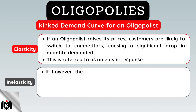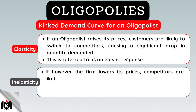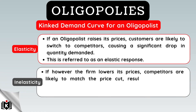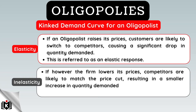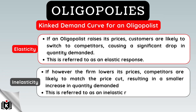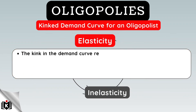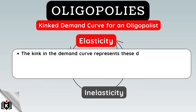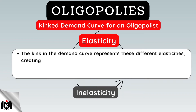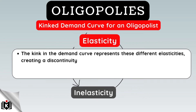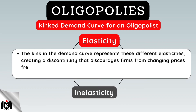If, however, the firm lowers its prices, competitors are likely to match the price cut, resulting in a smaller increase in quantity demanded. This is referred to as an inelastic response. The kink in the demand curve represents these different elasticities, creating a discontinuity that discourages firms from changing prices frequently.